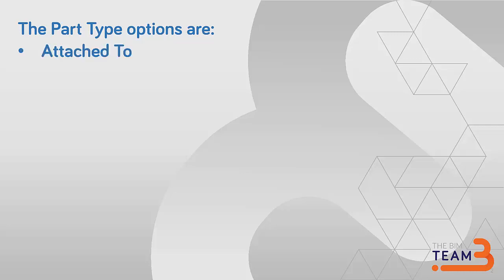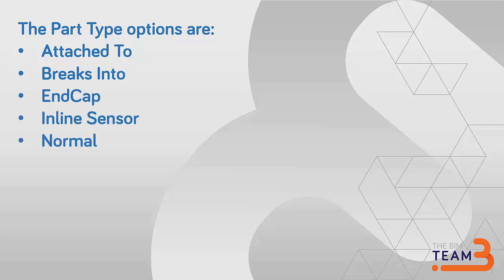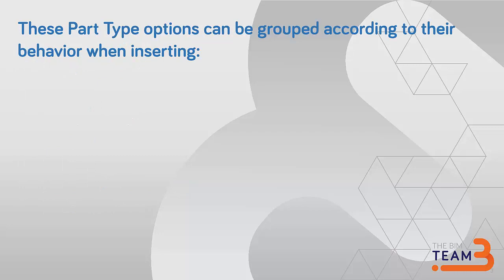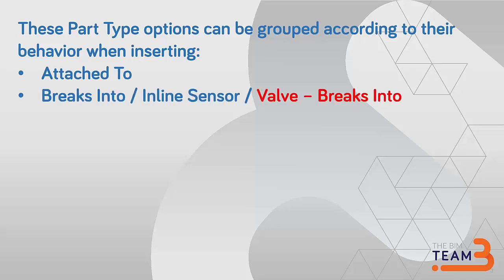The part type has eight options: attach-to, breaks-into, end cap, inline sensor, normal sensor, valve breaks-into, and valve normal. They can be grouped according to their behavior when you place them in the project. When you want to insert, you mainly have four kinds of behavior: attach-to, breaks-into, inline sensor, and valve. Breaks-into and end cap and sensor are inserted in a very similar way.